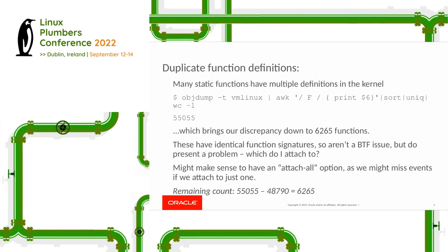Many of them are actually static functions which have multiple definitions. This can happen when different object files comprising the kernel include a header file with a static function that didn't actually get inlined. When you take them out of the mix you get down to about 6,000 functions. In these cases they have identical function signatures, so they aren't necessarily a BTF issue, but we probably want to provide mechanisms to allow people to trace them.